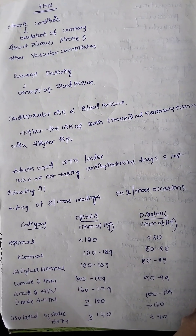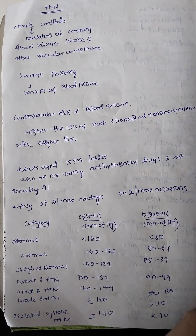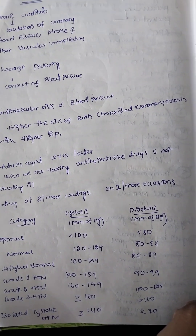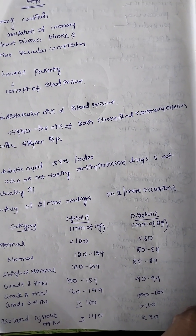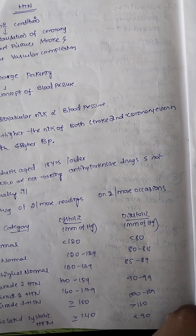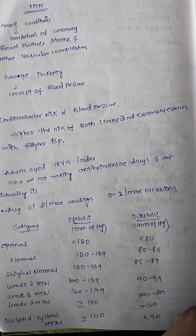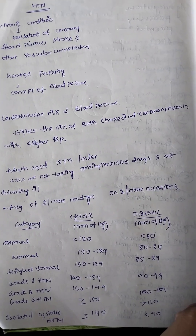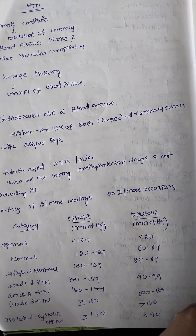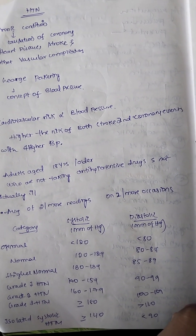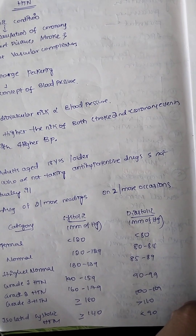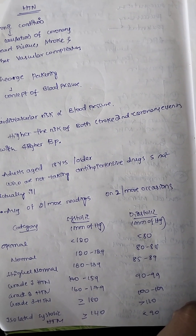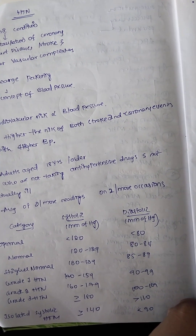How do we classify hypertension? Optimal is systolic less than 120, diastolic less than 80 mmHg. Normal is 120 to 129 systolic, 80 to 84 diastolic. Higher normal is 130 to 139 systolic, 85 to 89 diastolic. Grade 1 hypertension: 140 to 159 systolic, 90 to 99 diastolic. Grade 2: 160 to 179 systolic, 100 to 109 diastolic. Grade 3: greater than or equal to 180 systolic, greater than 110 diastolic. Isolated systolic hypertension: systolic greater than or equal to 140.